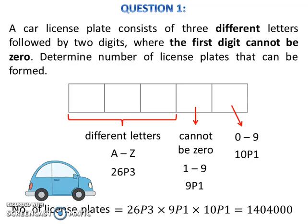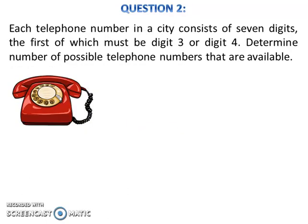Let's look at question 2. Each telephone number in a city consists of 7 digits, the first of which must be digit 3 or digit 4. Determine the number of possible telephone numbers that are available.